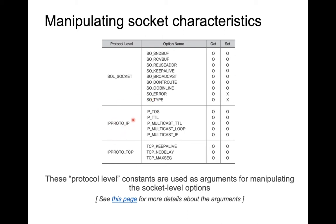At the IP protocol level there are options like type of service, time to live, and many others that you can both retrieve and set. At the TCP level you also have options like keep-alive and no-delay. For further detail, you can look at the related documentation or Google for protocol level option names to become more expert in socket programming.